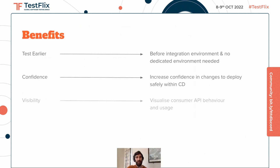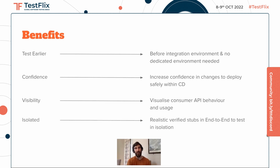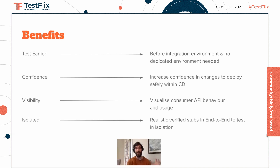What are the key benefits we're looking for? We're testing earlier without needing a dedicated environment. We're increasing our confidence because we can now rely on those tests and not depend on external services. The visualization of how the API actually behaves is a real boost. And all of our tests are isolated — they run on their own environments spun up as part of the pipeline, so we control what we have control over.